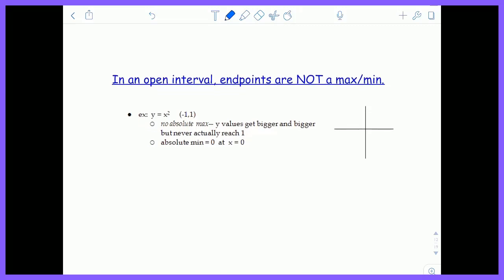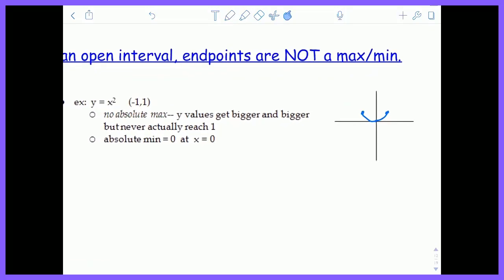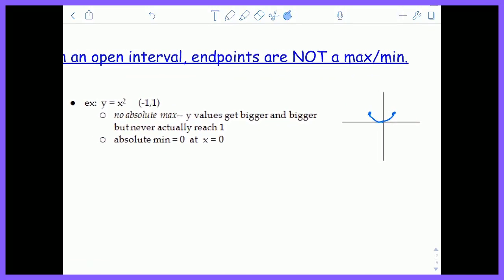Suppose we have the function y equals x squared. It looks like a parabola like this, and actually I'm going to delete the arrows on it. We're just going to go like this and like this. Suppose I have this function right here. We don't have an absolute maximum here because the function is getting bigger and bigger and bigger and bigger.